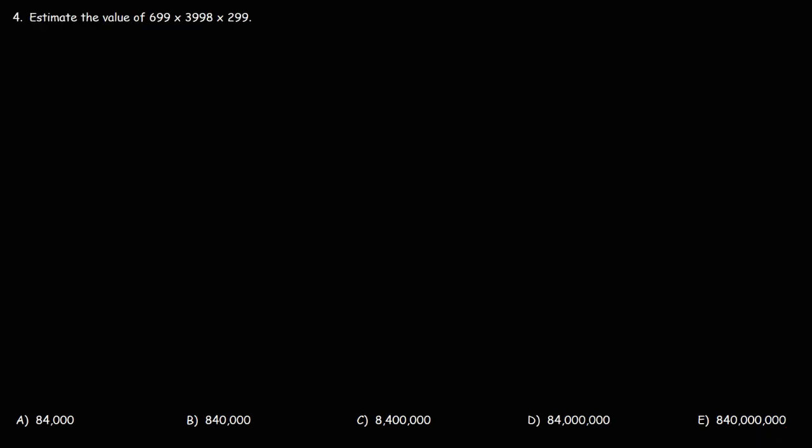Now, let's try an example using three numbers instead of two. So, estimate the value of 699 times 3,998 times 299. So, go ahead and work on that example.